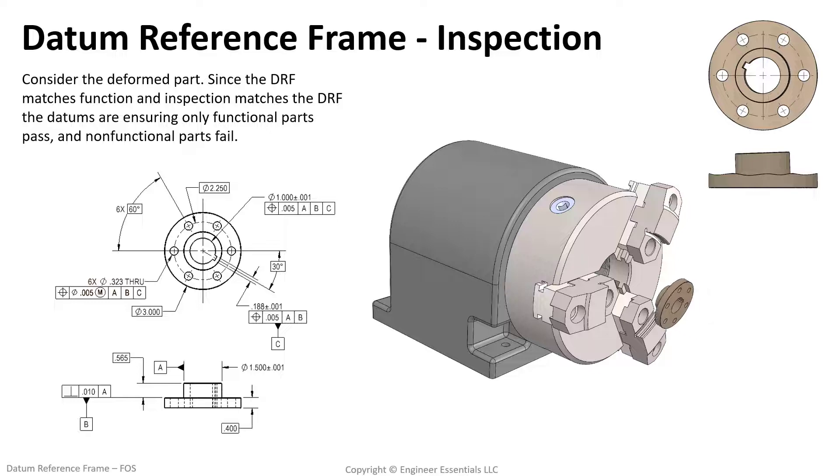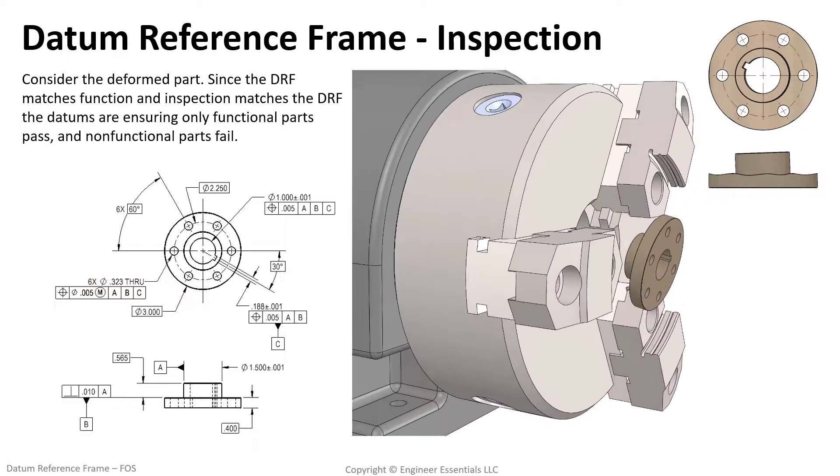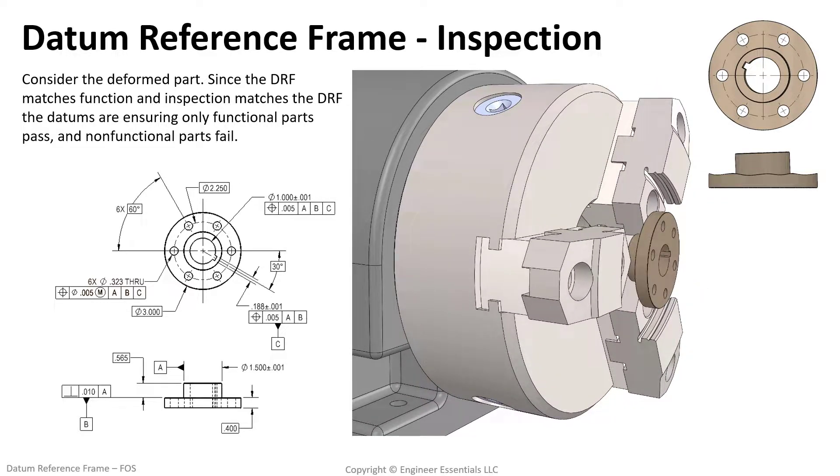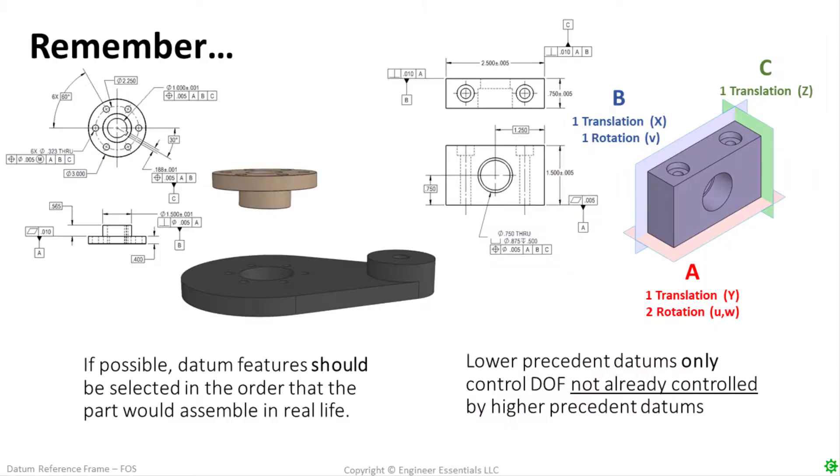Watch this animation as the part gets locked down for inspection. Notice how the chuck locks down on the boss and orientates the part based off of this feature. Then the part slides until the face datum feature B makes contact. If you're going to inspect the location of the bolt hole pattern it would be with respect to the boss. This may or may not be okay depending on your design intent.